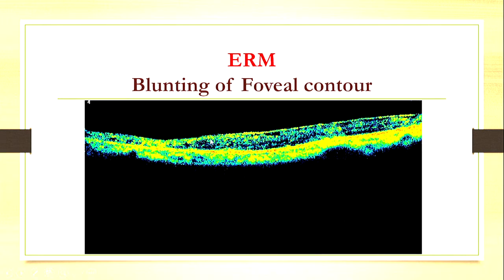This is an epiretinal membrane here. You see this line on the surface? This is the retinal surface. You see the membrane, and you see the foveal contour is blunted. So this is an epiretinal membrane. Some blunting of the foveal contour is there. It could cause some visual effects.